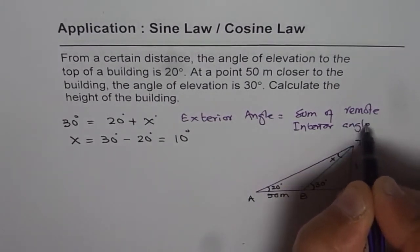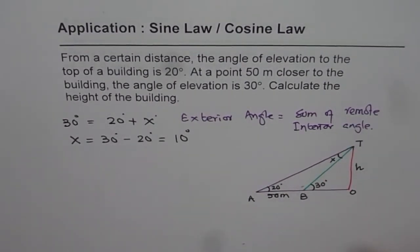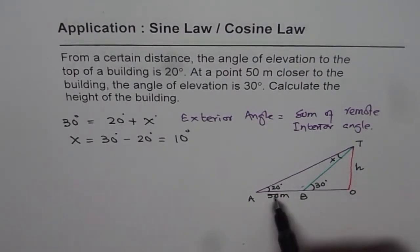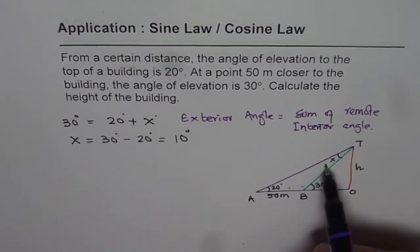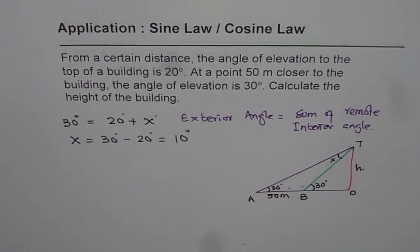So we have used exterior angle equals to sum of remote interior angles. It's good to know. We could always do straight line is 180 and find it out. Now it's important to find this x, since 50 meters was given to us, and if we need to apply sine law, we should know one set which is opposite angle and the side. Now once we know that, we can find the other two sides.